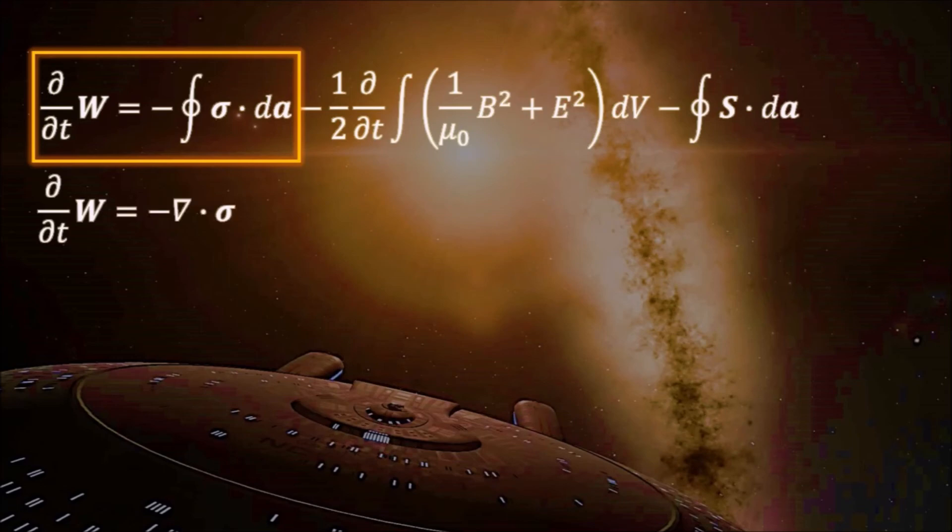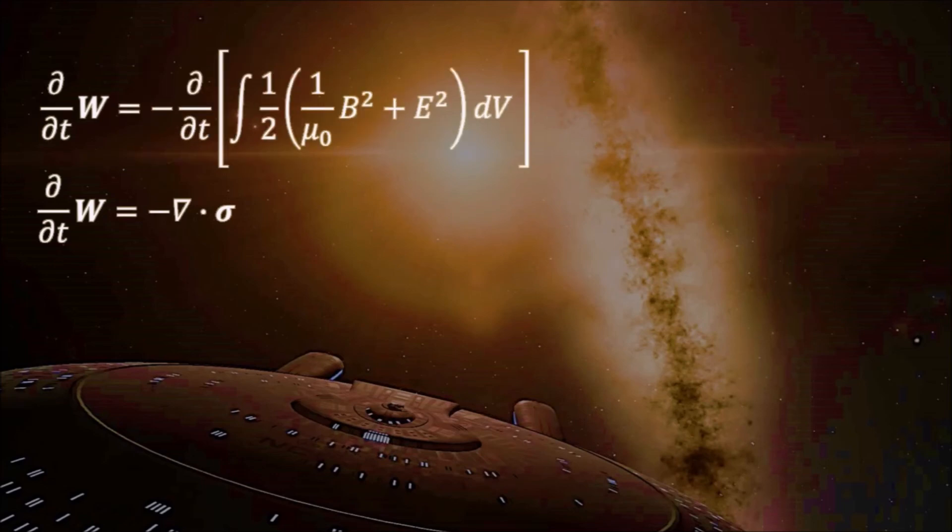If we let the volume integral go to infinity, these two surface integrals will vanish, and we end up with an equation similar to the one for conservation of total momentum from earlier, but this time for the total energy. That means that this term must be the total energy of the electromagnetic field, which makes the integrand the energy density of the field.